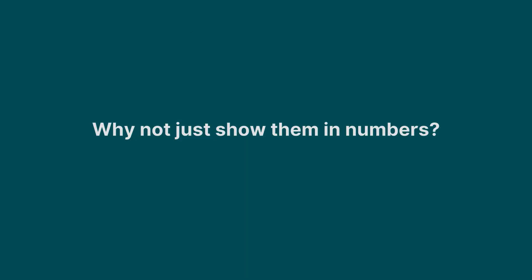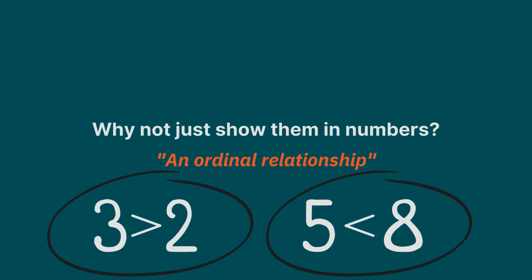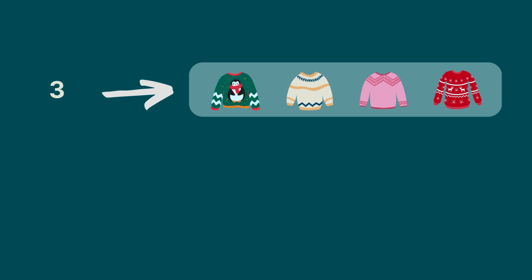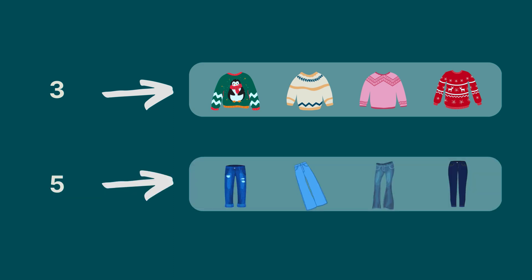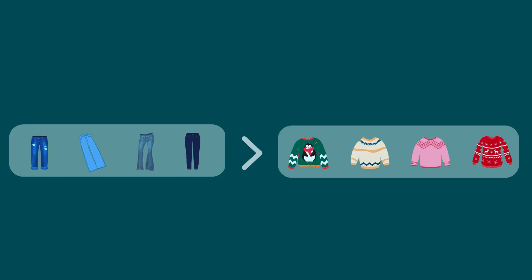And why not just show them in numbers? Because numbers have an ordinal relationship between them, meaning 3 is greater than 2 and 5 is lower than 8. But categories do not necessarily have this relationship. If category 3 represents sweater and category 5 represents jeans, it does not mean that jeans are greater than sweaters.